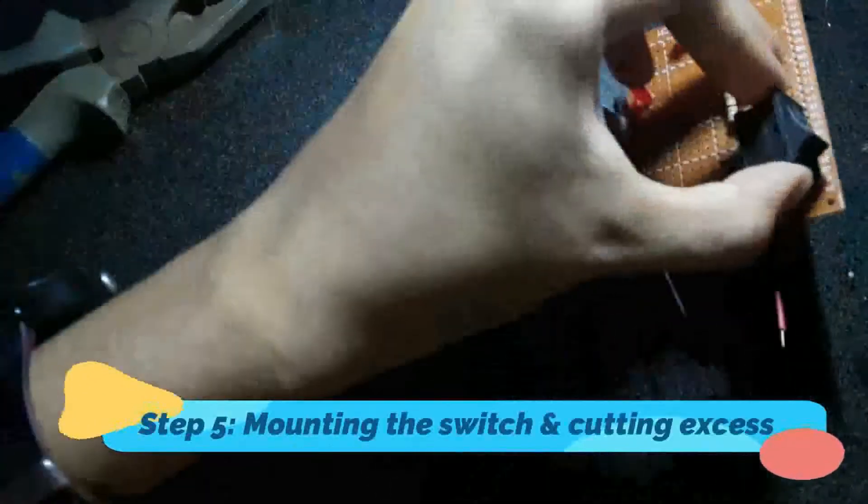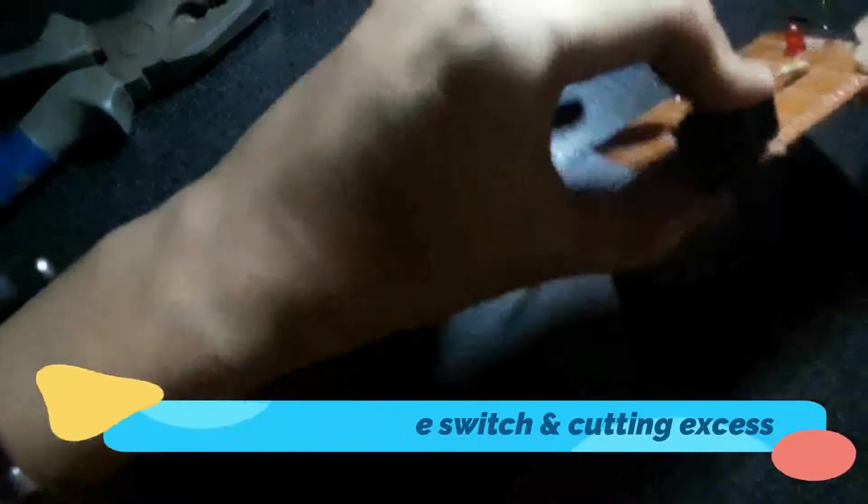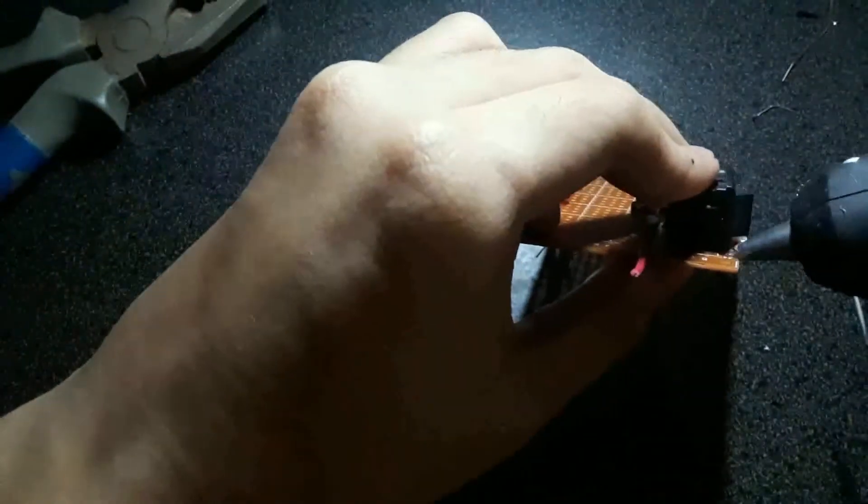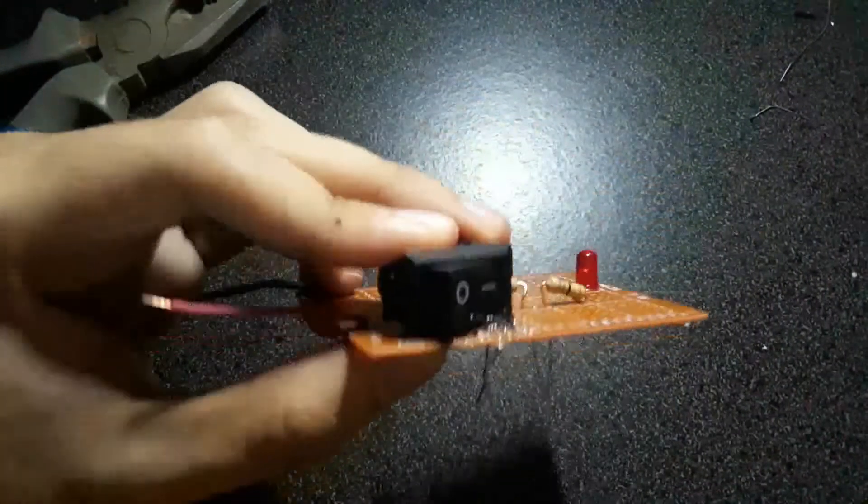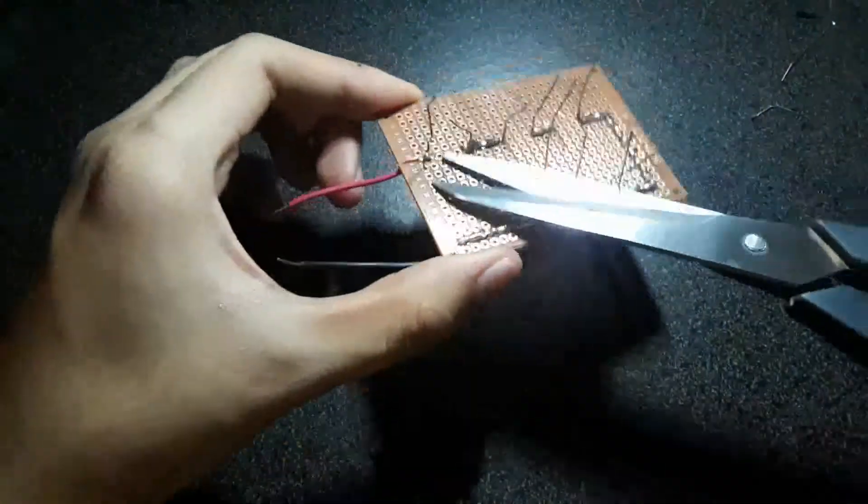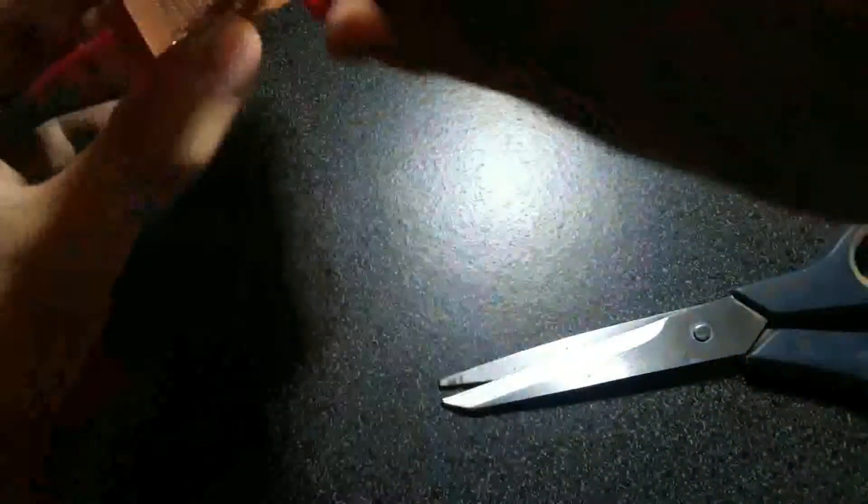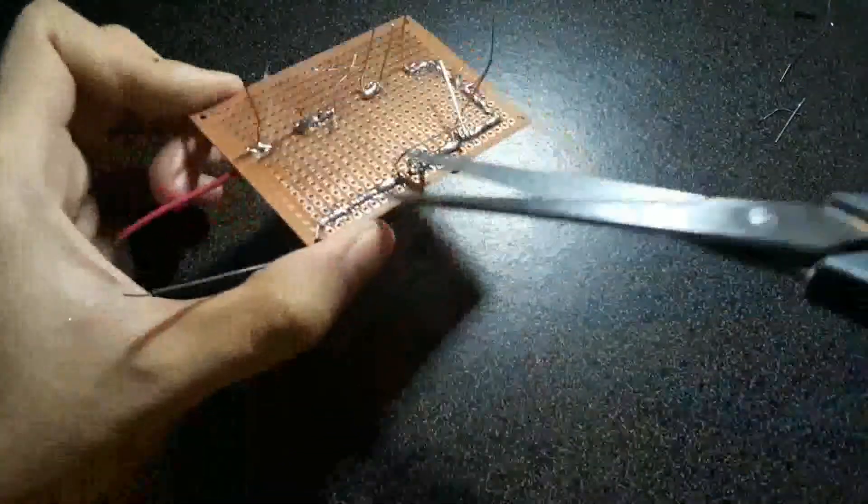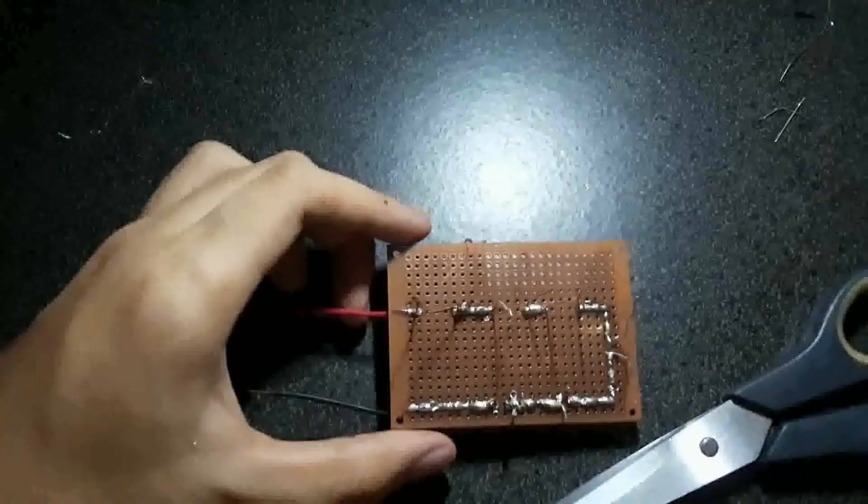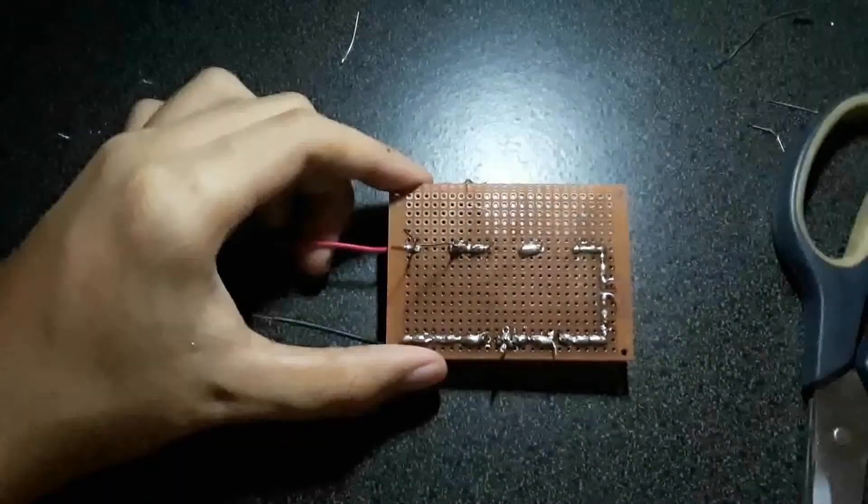Step 5: Mounting the switch and cutting excess. Mount the switch in the PCB using a glue gun or anything to paste it in the PCB. Then, let's cut the excess in each pin using a pliers or a pair of scissors. Take note to be careful in cutting because of sharp excess that might spit out.